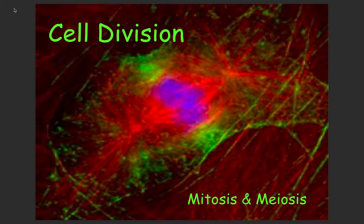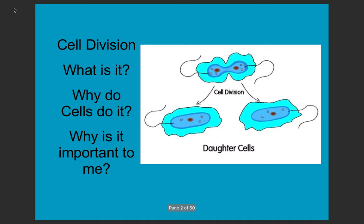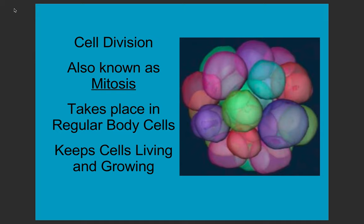Feel free to stop and pause this video at any point to take a few notes as you go along. Cell division — what is it and why do cells do it? Cell division is constantly taking place in your body. Your cells can be damaged, they can get too large, or they just might need to constantly be reproduced and replaced. So mitosis is constantly happening in all of your cells, at different rates depending on the type of cell, but it keeps those cells alive and well.